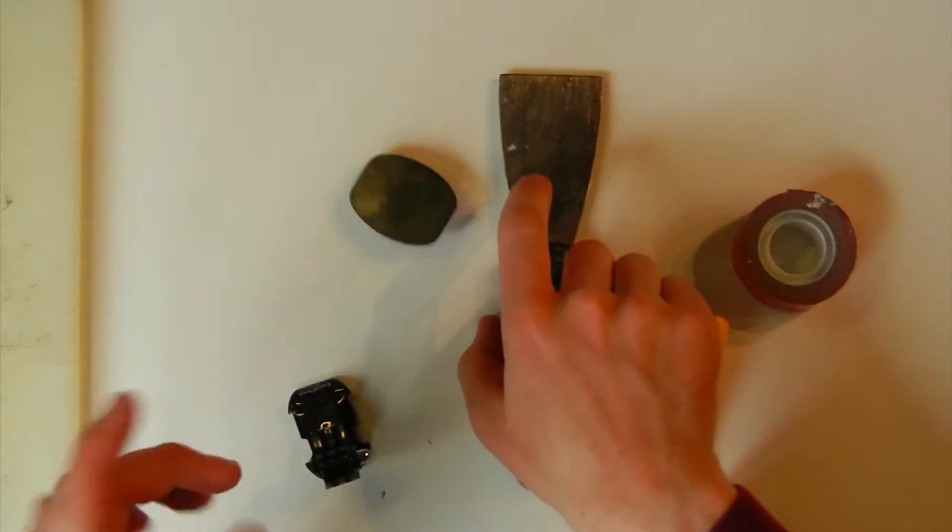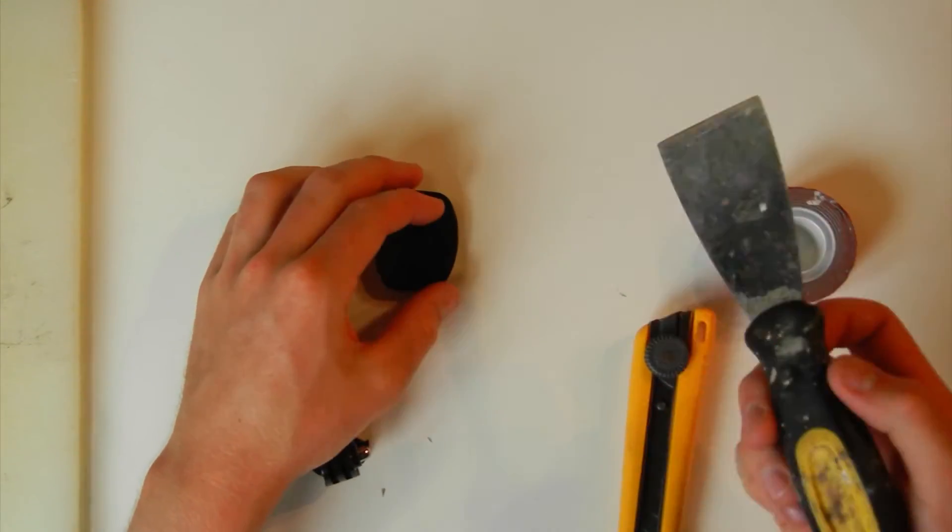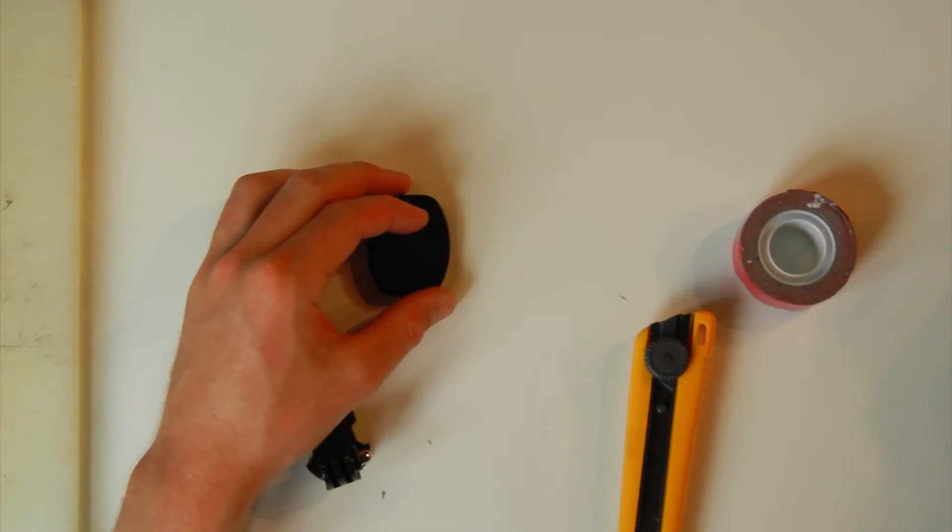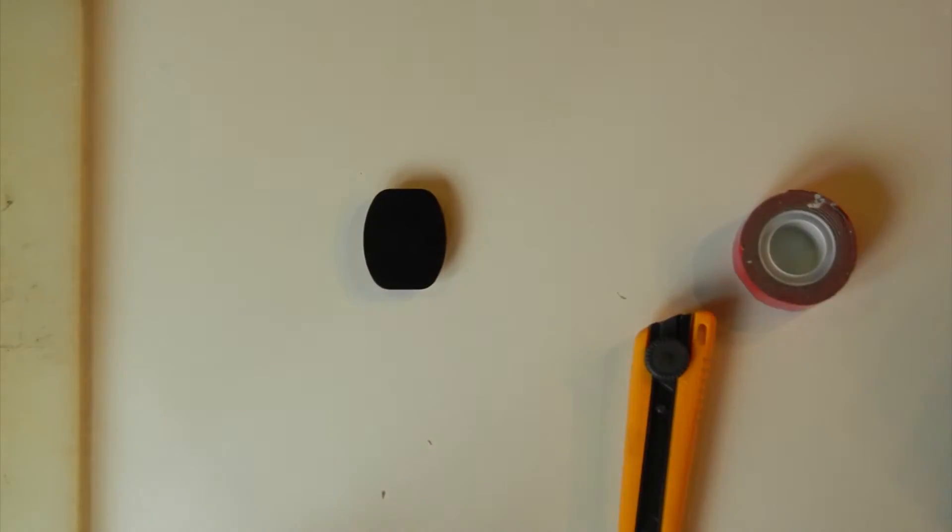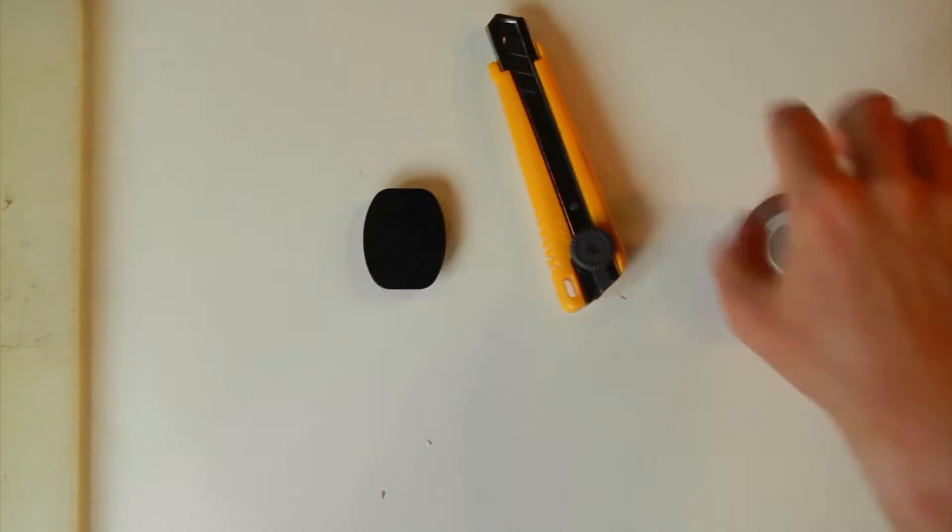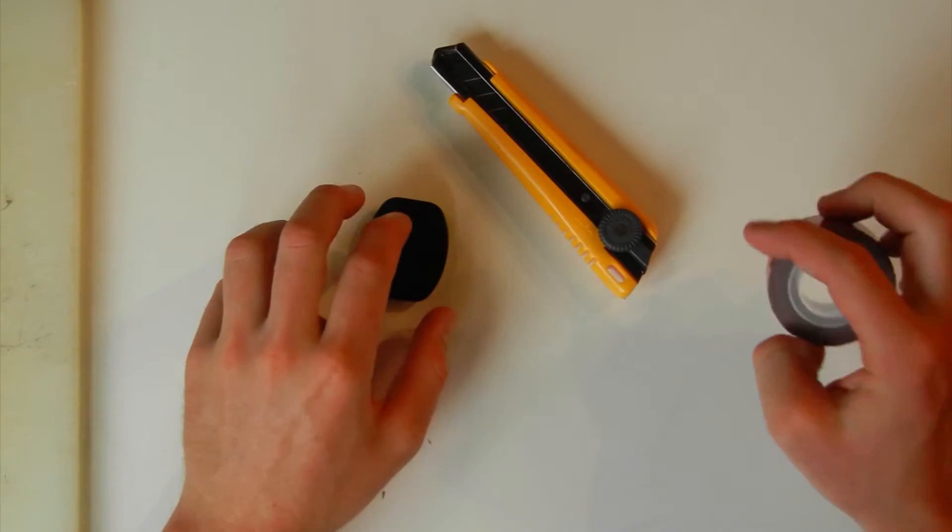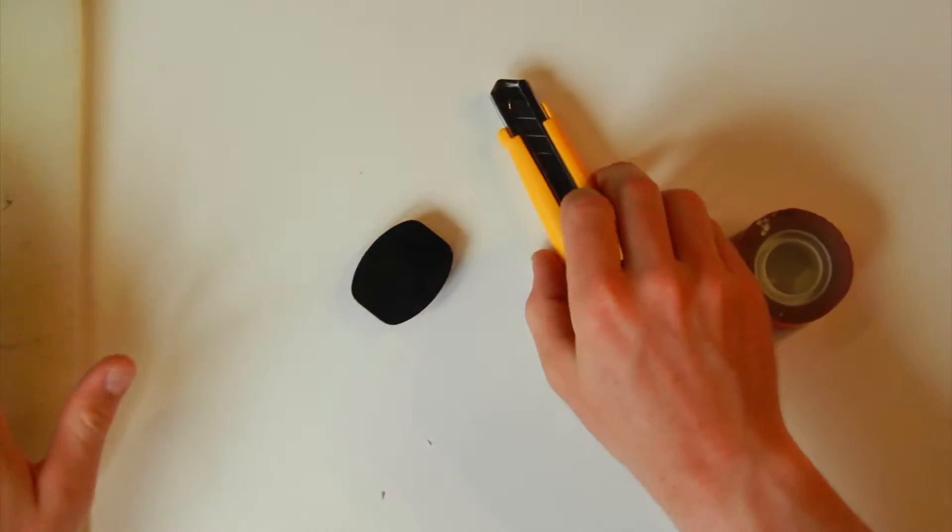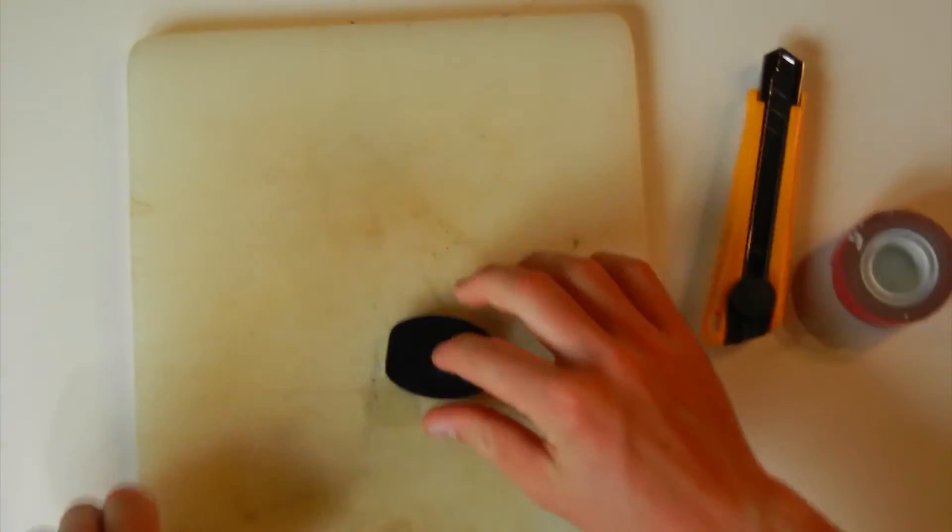All right, so now that we've done that, we can put our heat gun away, or our blow dryer, whatever it may be. We don't need our scraper anymore. We don't really need our mount anymore. Now all we need is our X-Acto knife, VHB double-sided sticky tape, our mount, and our cutting board. Bring our cutting board over.